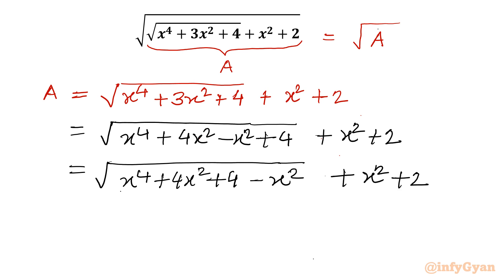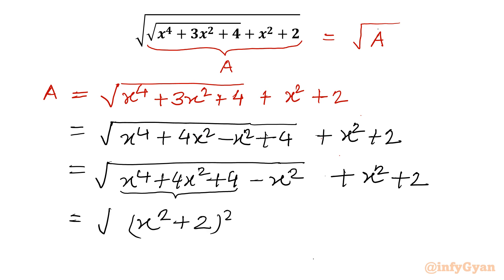Now I will consider x to the power 4 plus 4x squared plus 4, which is one perfect square — it is square root of x squared plus 2, whole squared. You can check: x squared whole square gives x to the power 4, 2 whole square gives 4, and 2 times x squared times 2 gives the middle term 4x squared. Then after we are having minus x squared plus x squared plus 2.